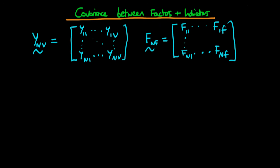In this video I want to demonstrate how we can derive the covariance between indicator variables and factors when we store our data variables in matrix form. We have a matrix of indicator scores where each row represents the various indicator scores for a given individual. Similarly, we have a matrix F which is n by f in dimensions, where each row represents a given individual's factor scores.